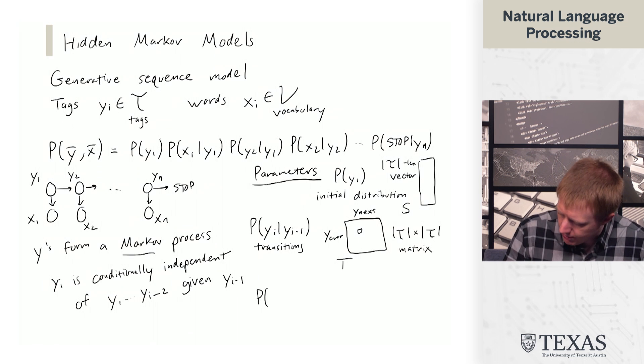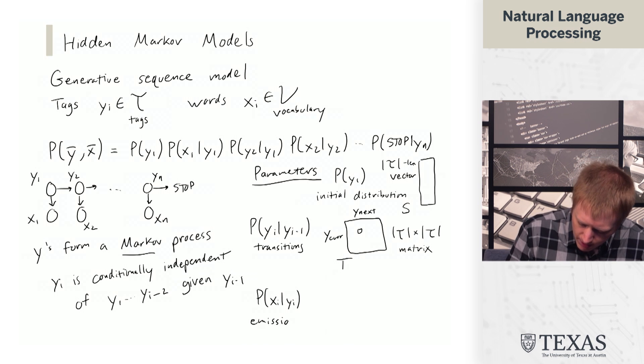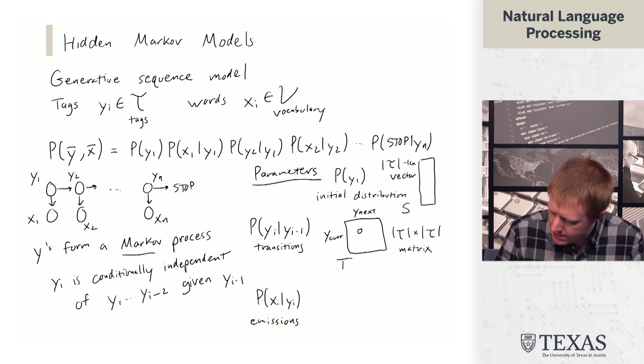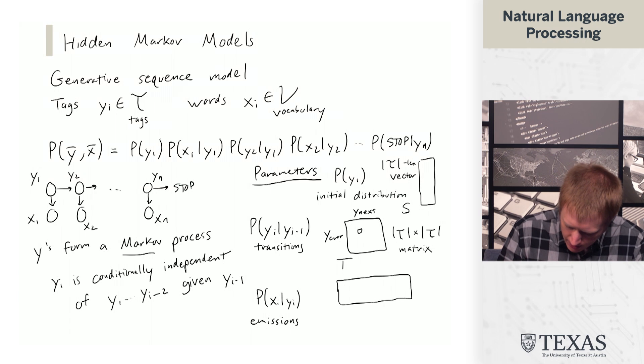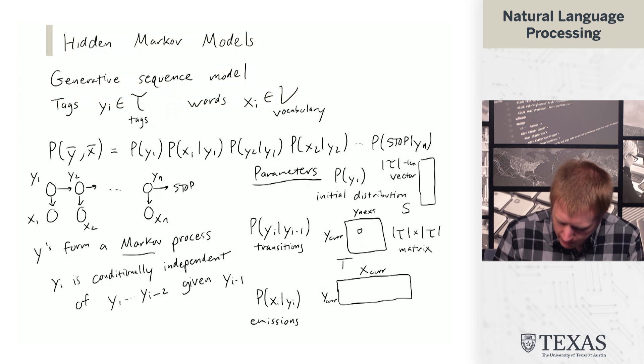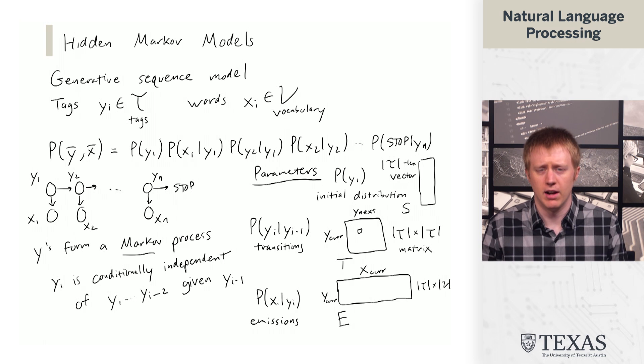All right. And then we have these PXI given YI terms, and these are called emissions. And the parameters here, I'm going to draw a kind of long matrix here. We'll call it Ycur and Xcur. And we're going to call this thing E and it is going to be T by V. Again, a matrix.